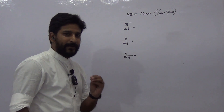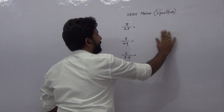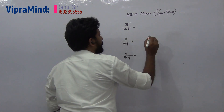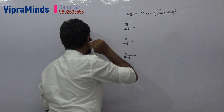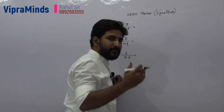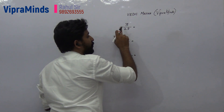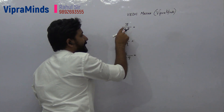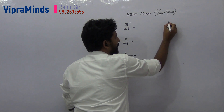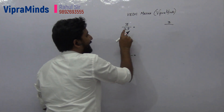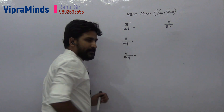So it will be very helpful in competitive examinations as well as in school examinations. We will find the solution using the Vedic Mathematics technique. Please learn the technique and then take multiple examples so it will become easier to solve this type of question within a few seconds. So what you have to do: take 3 divided by 29. The first step is to increase the denominator by 1, so it will be 30.